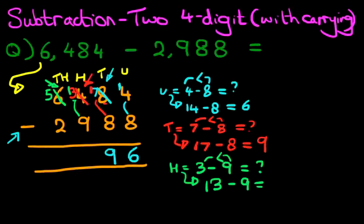13 minus 9. That's right. 13 minus 9 is 4. So let's write this down.